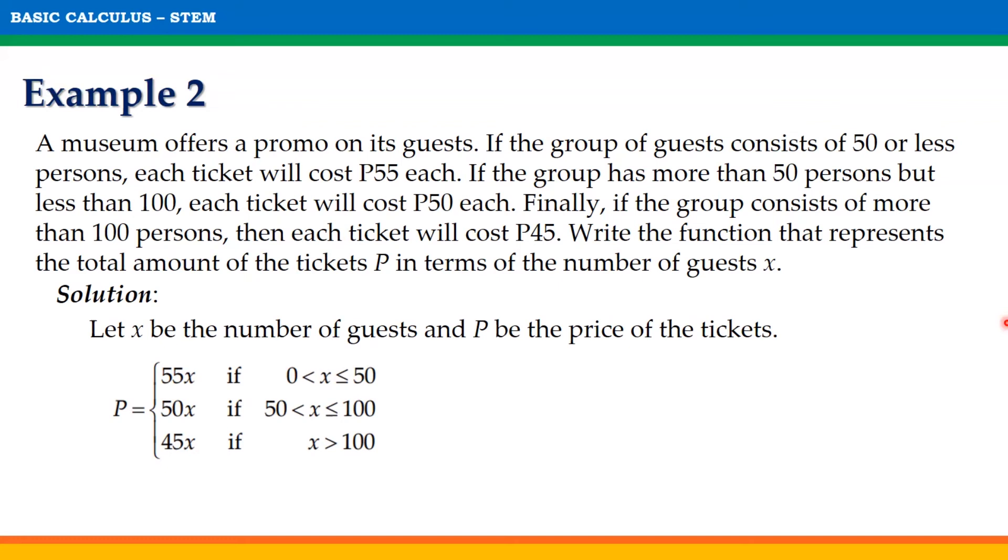Thus, the function of the total amount of tickets represents a piecewise function defined by P equals 55x if x is greater than 0 but less than or equal to 50, 50x if x is greater than 50 but less than or equal to 100, and 45x if x is greater than 100.